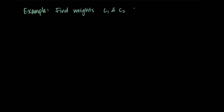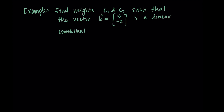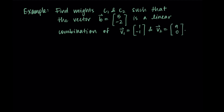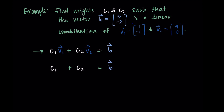For our first example, let's find weights c1 and c2 such that the vector b = [5, -2] is a linear combination of v1 = [1, -1] and v2 = [9, 0]. We have a desired outcome — b is the vector we want — and we need to find appropriate weights to make this true. Mathematically, we want c1·v1 + c2·v2 = b, and we're going to solve for our c values.